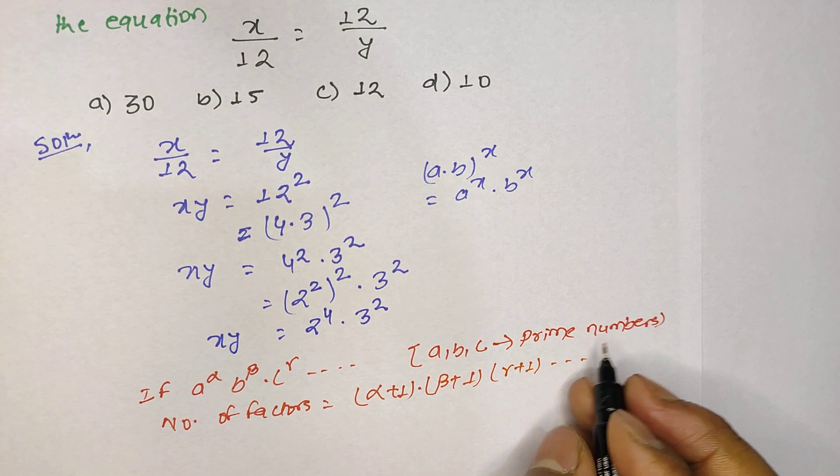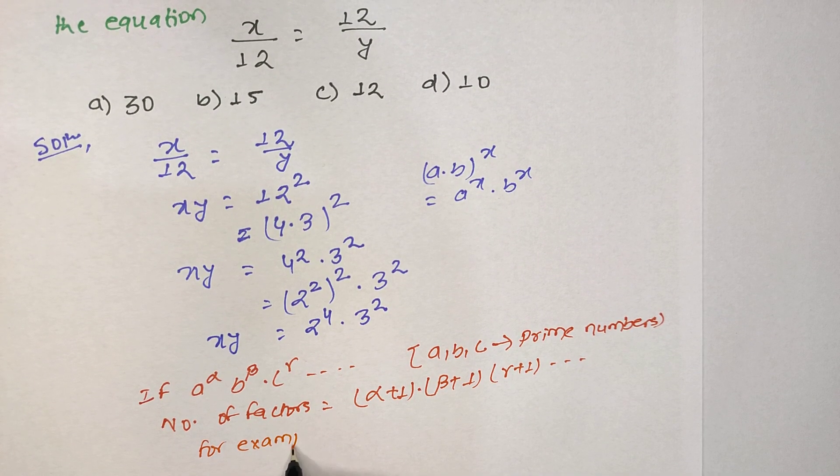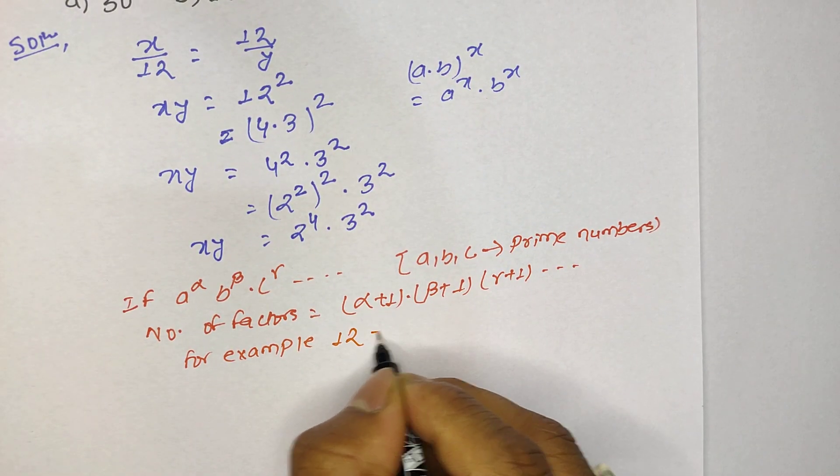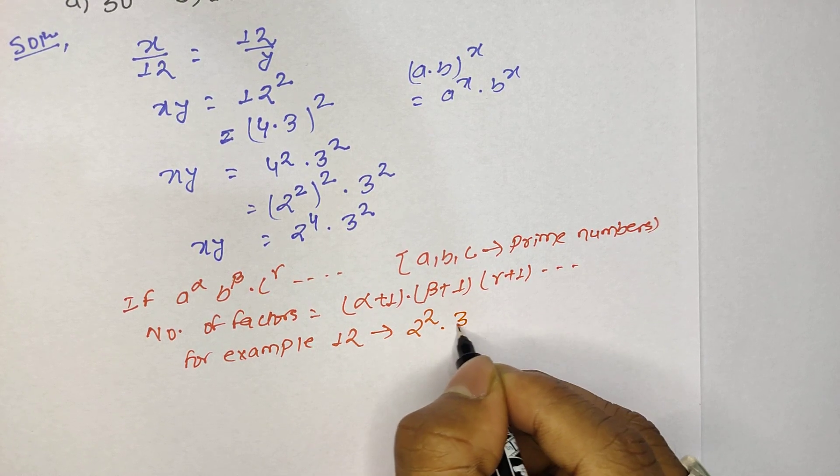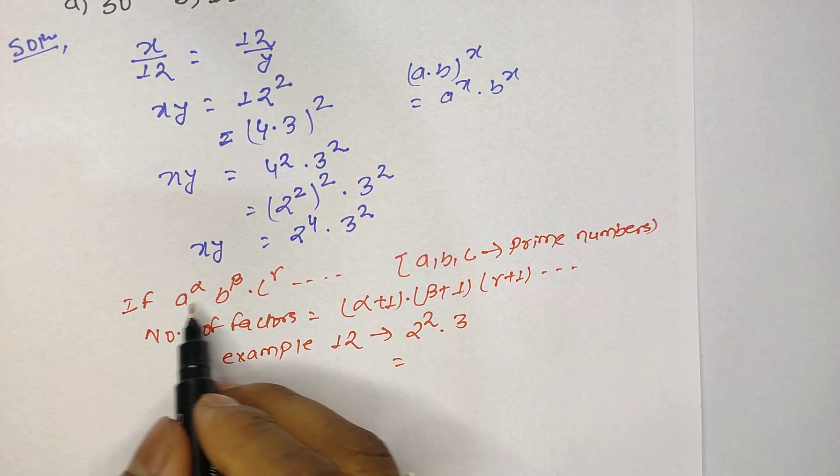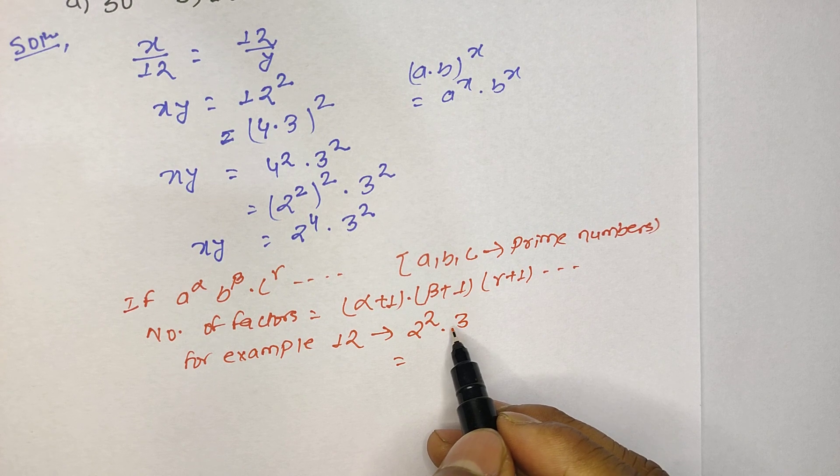For example, we can take the example of 12. So 12 can be written as 2 power 2, that is 4, times 3. As you know that 2 and 3 both are prime numbers. Here the condition is a, b, c are the prime numbers, so 2 and 3 are our prime numbers.